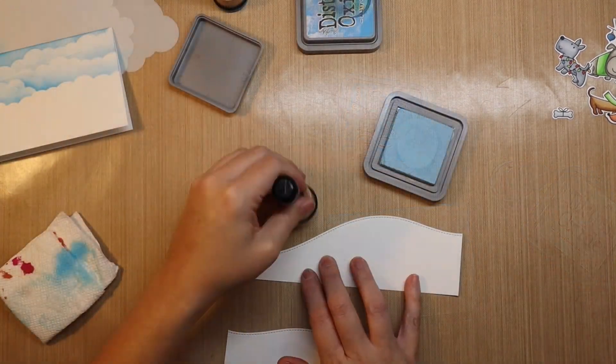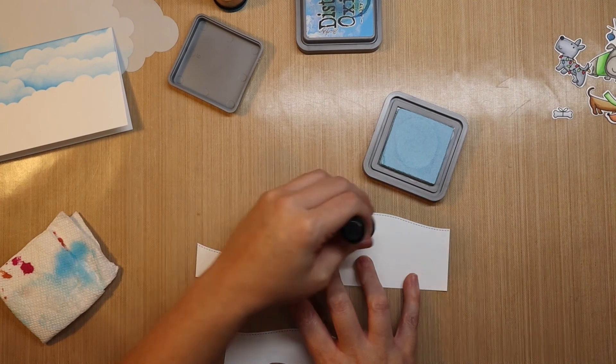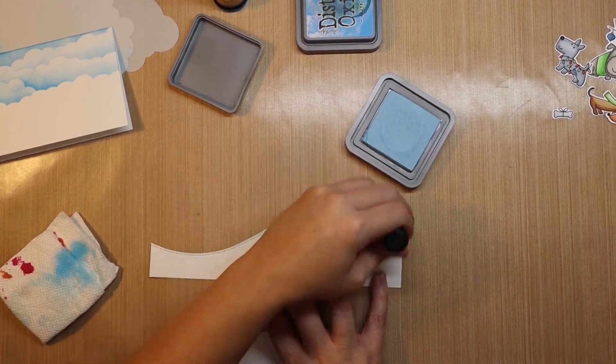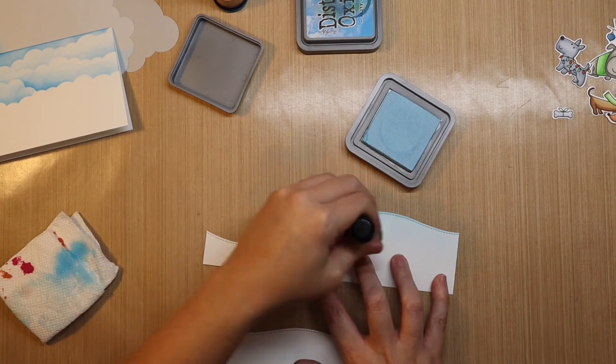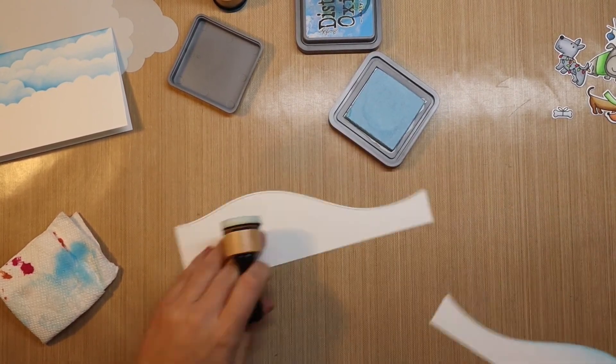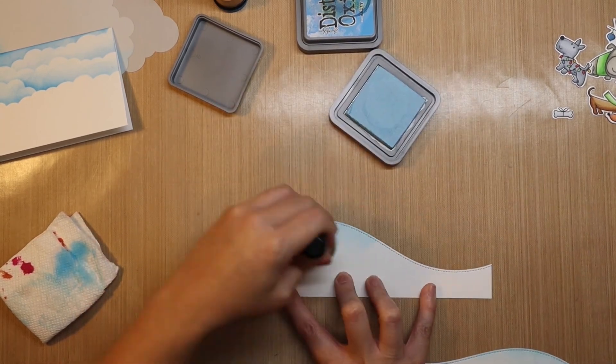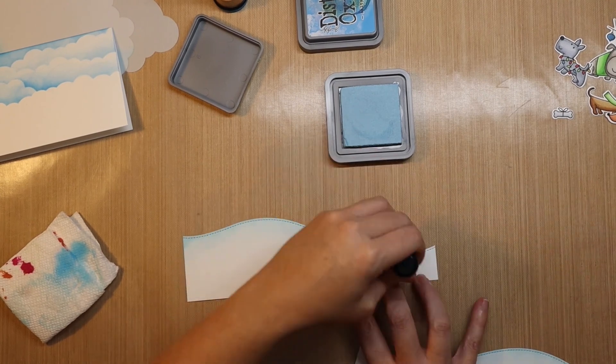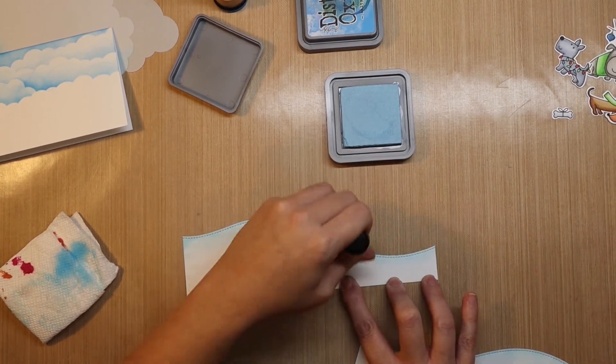So these clouds are directly onto that slimline card base. And then these hillsides are going to go on top. I'm just going in with a light hand adding a little bit of this light blue just at the top of these slopes, just to give a little bit of interest and dimension to these flat panels.